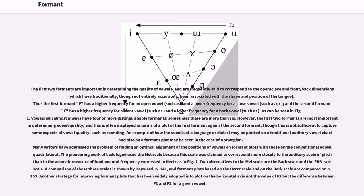The first two formants are important in determining the quality of vowels, and are frequently said to correspond to the open/close and front/back dimensions which have traditionally, though not entirely accurately, been associated with the shape and position of the tongue. Thus the first formant F1 has a higher frequency for an open vowel and a lower frequency for a close vowel, such as i or u.